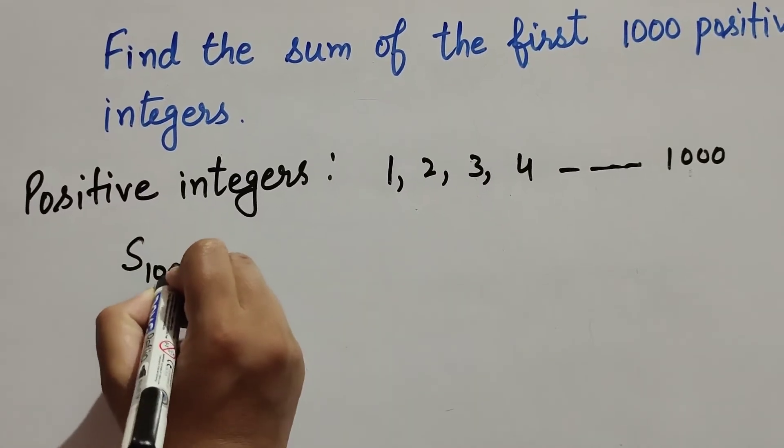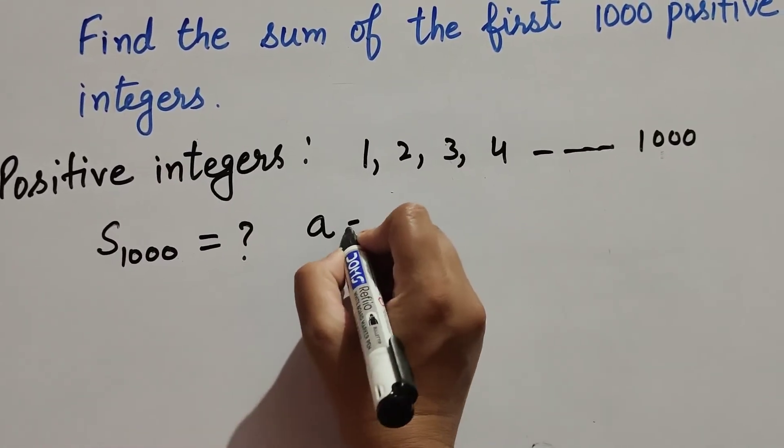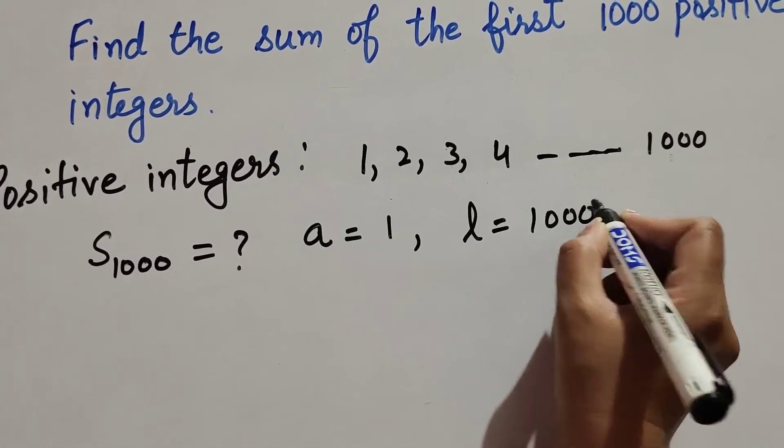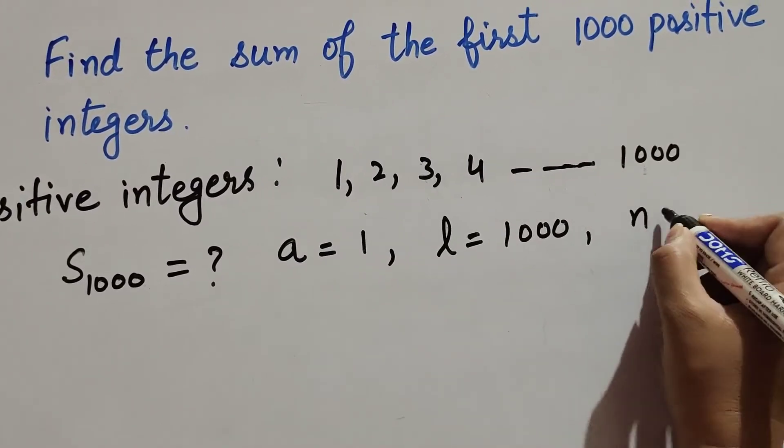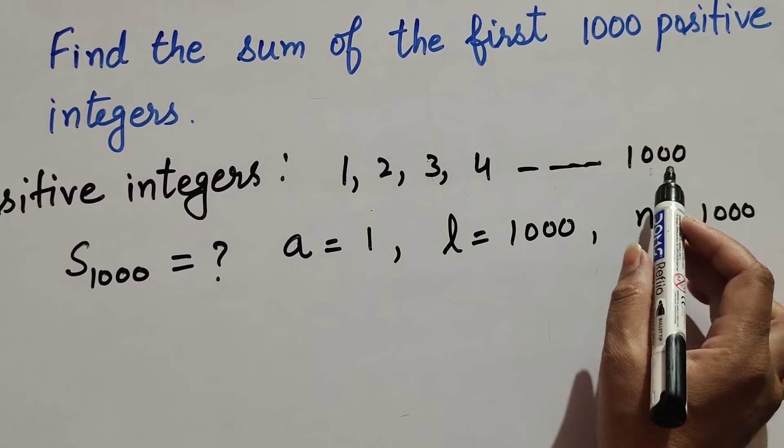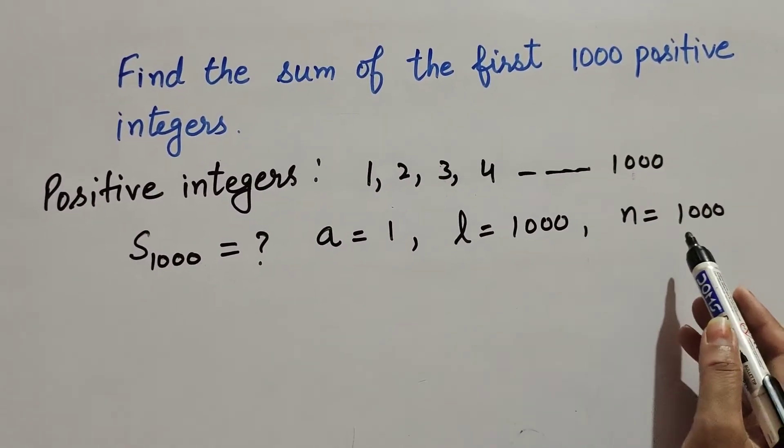Sum of thousand positive integers that we find. In this first term is 1, last term is thousand and total number of terms and it is also given thousand. It started from 1 and ended at thousand. So total number of terms are thousand.